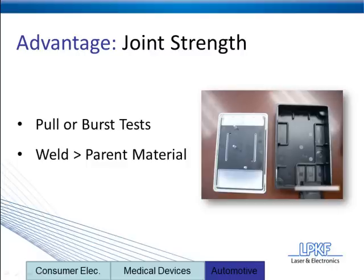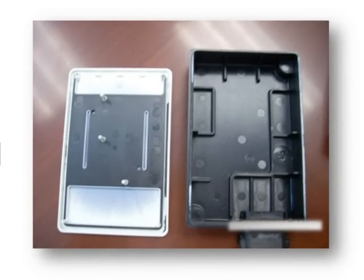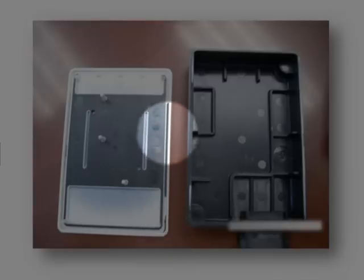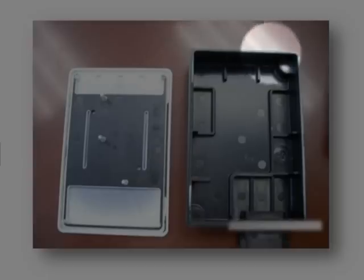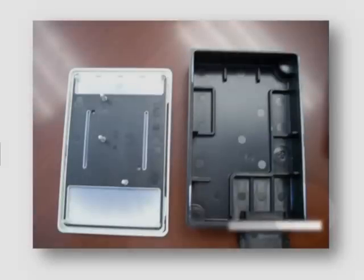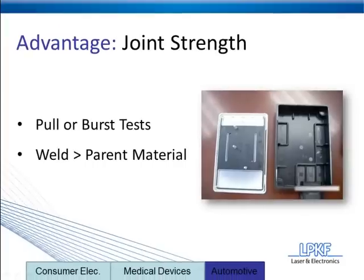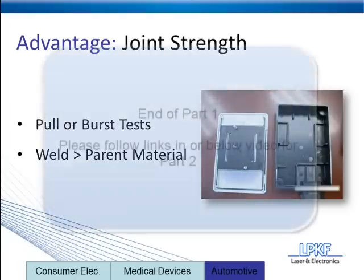Let's zoom in and find out for ourselves. This white part is a lid that originally sat on top of the housing, with the joint running all along the edges. What we're looking for is material transfer. You can see black transfer here and in the corner, and on the housing you can see white transfer along the edges. What that tells us is that as these two pieces were broken apart, the breakage occurred not in the weld but in the parent material — some of that material was left on each piece of plastic. So in this case, laser plastic welding did indeed create a very strong weld.